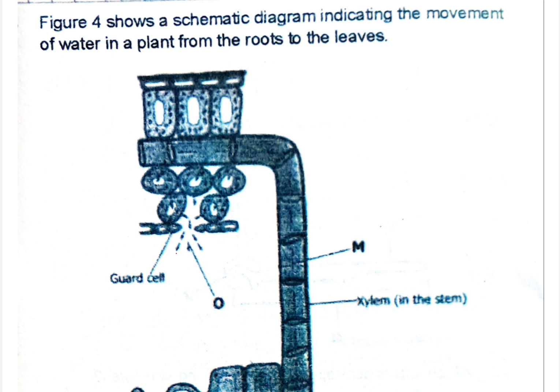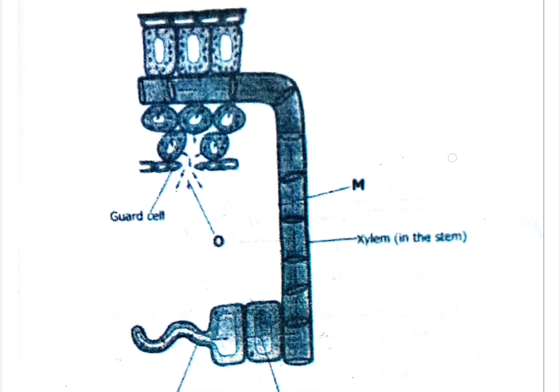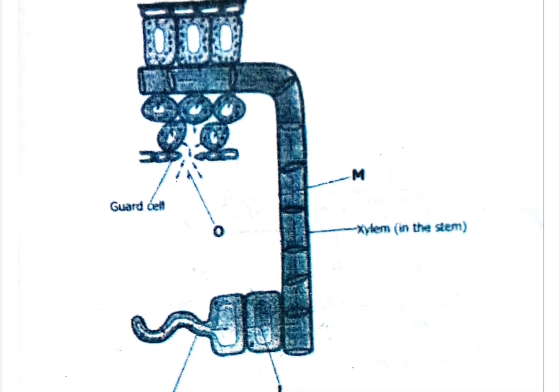So here is the question. Figure four shows a schematic diagram indicating the movement of water in a plant from the roots to the leaves. As you can see, this is a schematic diagram. This part is the root part, this is the stem, and this is the leaf part.